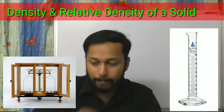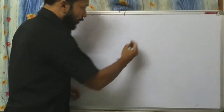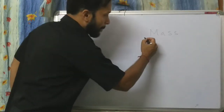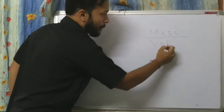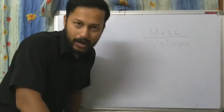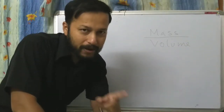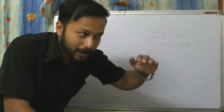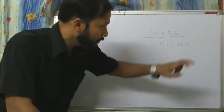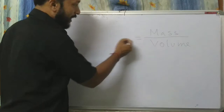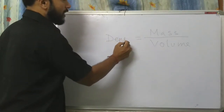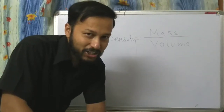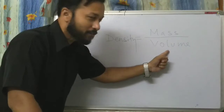So first you have to calculate mass, then you have to divide that mass by its volume. Mass will be measured by physical balance, and volume will be measured by measuring cylinder. Then we divide mass by volume.